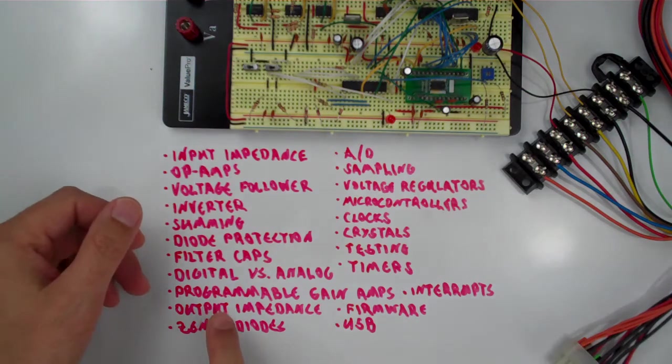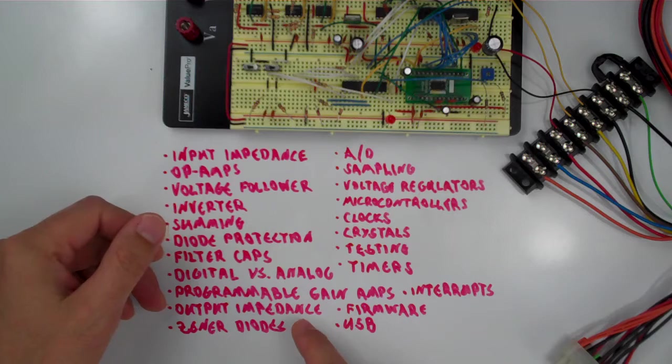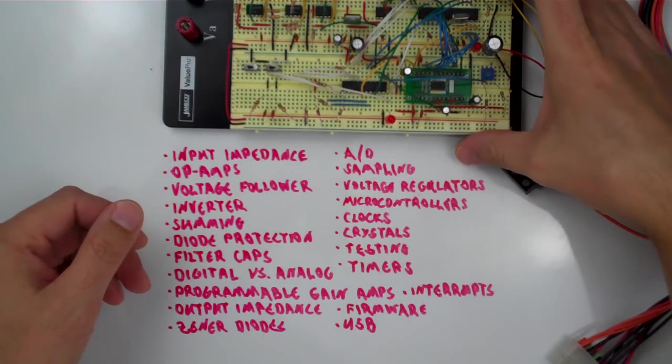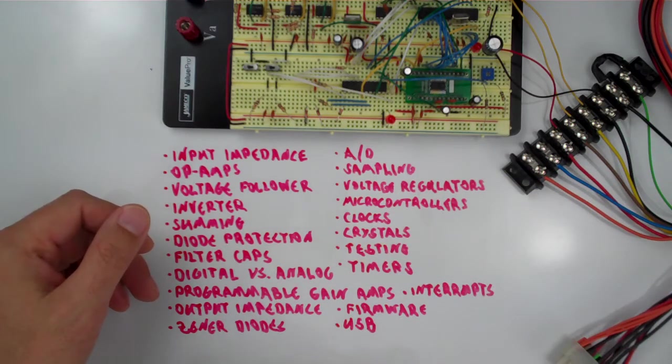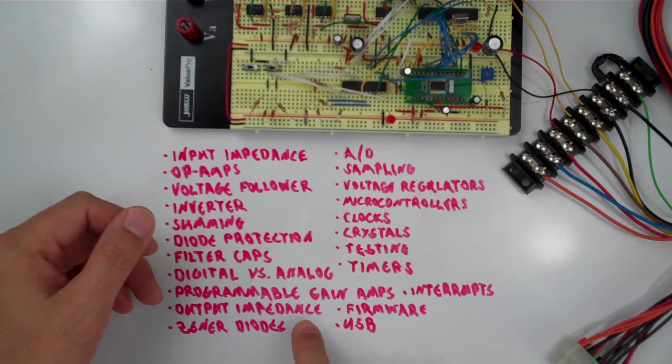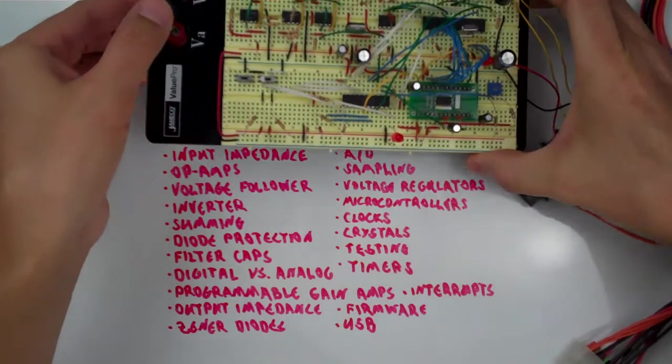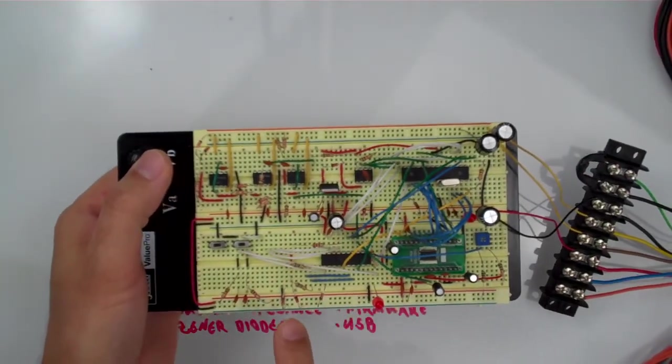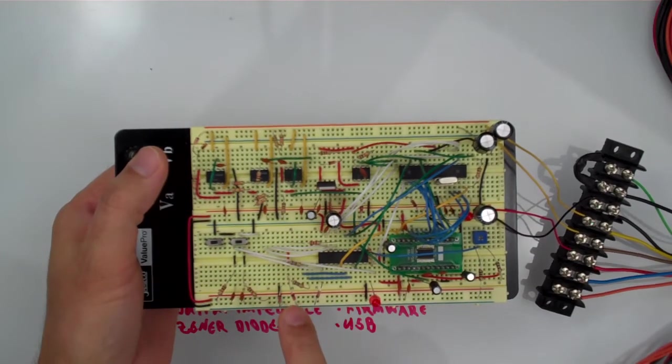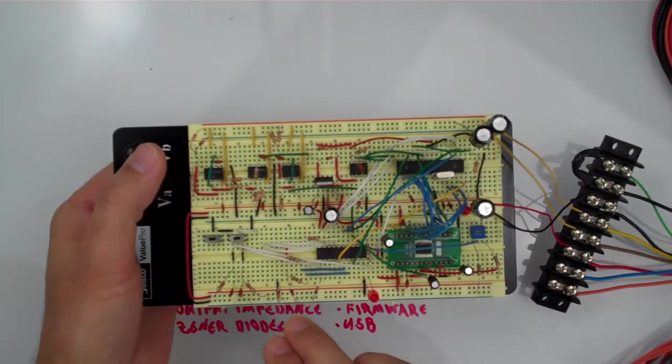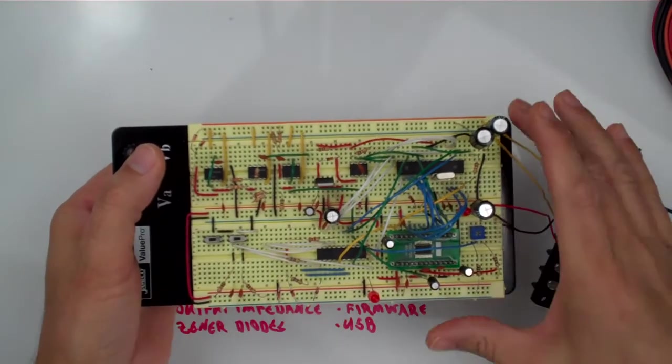You're going to learn about the programmable gain amplifiers. You're going to learn about output impedance. There's many times in here where I needed to drive one circuit from another and the output impedance from the previous stage was very important. You're going to learn about zener diodes. They're actually being used right here. These are a couple of zener diodes that we're using to make sure that our voltage levels, we're doing some voltage level conversion from 5 volts down to 3.3 volts.